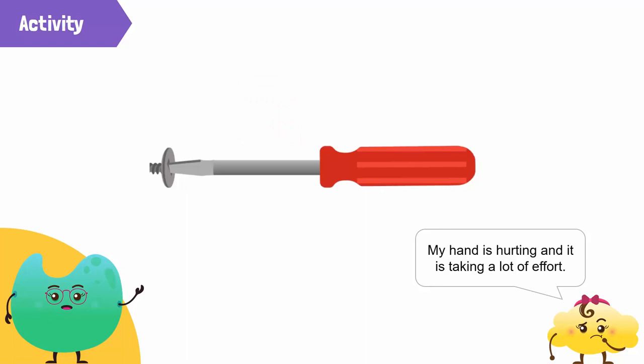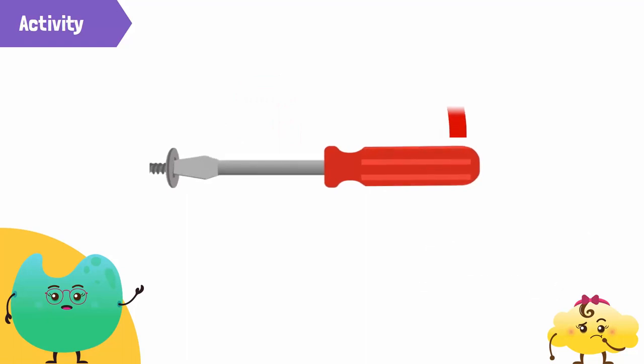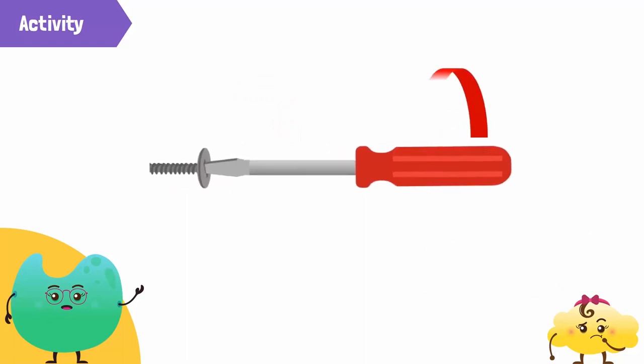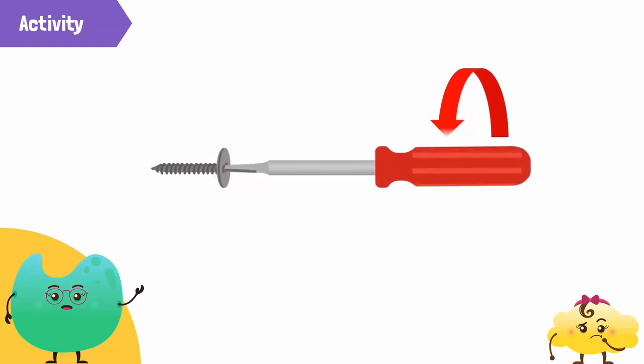Now, open the same screw by turning the screwdriver by its handle. It is easier to open the screw by rotating the handle of the screwdriver compared to opening it with the shaft. This is an example of the wheel and axle.